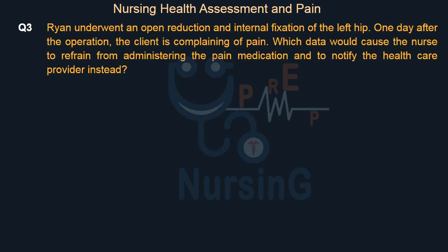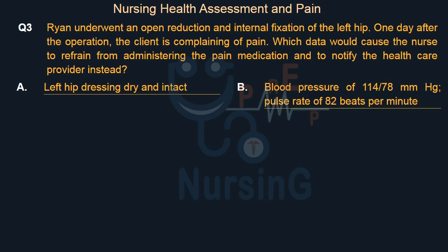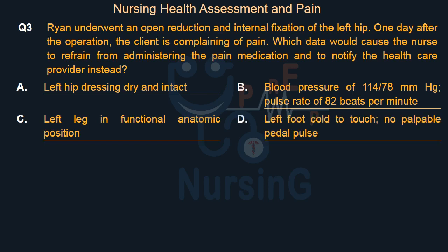A client underwent an open reduction and internal fixation of the left hip. One day after the operation, the client is complaining of pain. Which data would cause the nurse to refrain from administering the pain medication and to notify the healthcare provider instead? Option A: Left hip dressing dry and intact. Option B: Blood pressure of 114/78 mmHg, pulse rate of 82 beats per minute. Option C: Left leg in functional and anatomic position. Option D: Left foot cold to touch, no palpable pedal pulse.